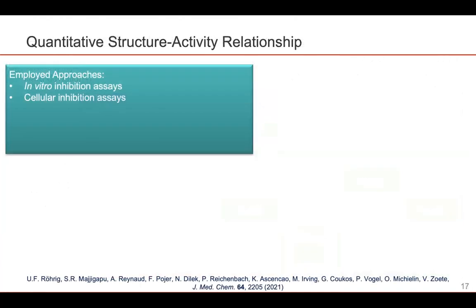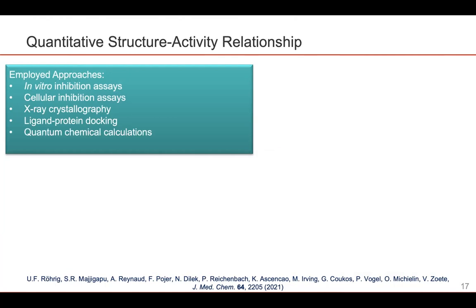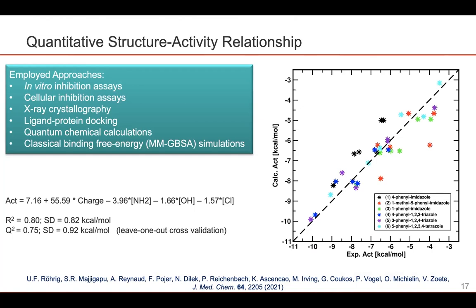We could also show that the same substituent on the phenyl ring could have very different influence on the activity, depending on what heme binding scaffold it was attached to. In the following, we used bioinformatics tools to try to understand the relationship between the structure and the activity of these compounds. To explain the in vitro and cellular inhibition assay results, we used X-ray crystallography to determine complex structures. Based on these, we used ligand-protein docking, quantum chemical calculations, and classical binding free energy simulations in order to correlate structure to activity. As a result, we could come up with a very simple equation that very well described the different activities of these different compounds spanning four orders of magnitude.